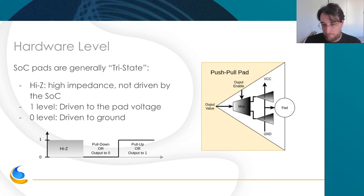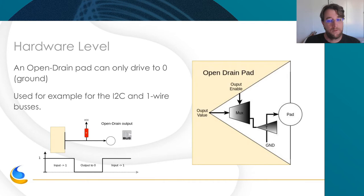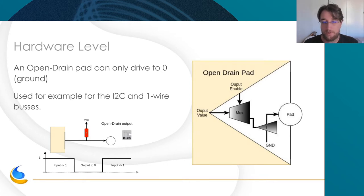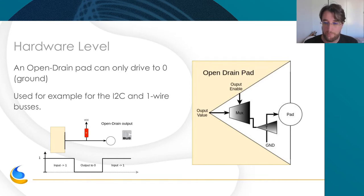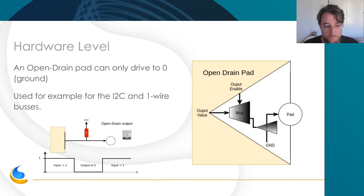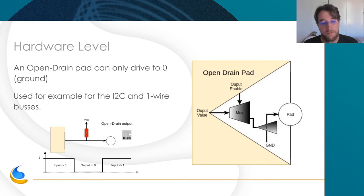For some special applications like I2C or one-wire, you have special pads called open drain pads. They can only drive to ground — only to zero — they can't drive to one. So it's either in input mode or driving to ground. When you look at the diagram you can manage to have a one or zero on a bus, but you need a pull-up on the PCB. This pull-up will pull the level to one when the SoC is in input mode. This is how I2C works — none of the I2C devices ever drive to one, they only drive to zero.